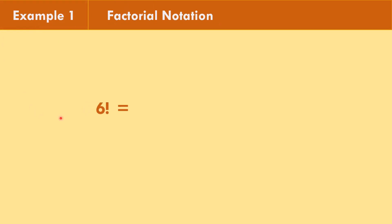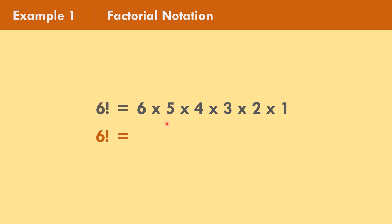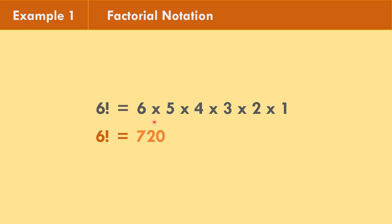In example number 1, 6 factorial means 6 times 5 times 4 times 3 times 2 times 1, going down until we reach 1. If we multiply: 6 times 5 is 30, times 4 is 120, times 3 is 360, times 2 is 720, times 1 is 720. So 6 factorial is equal to 720.